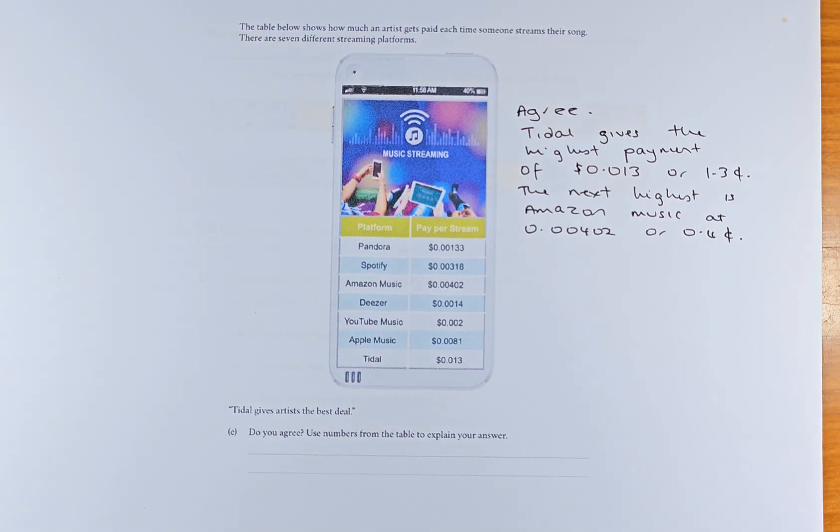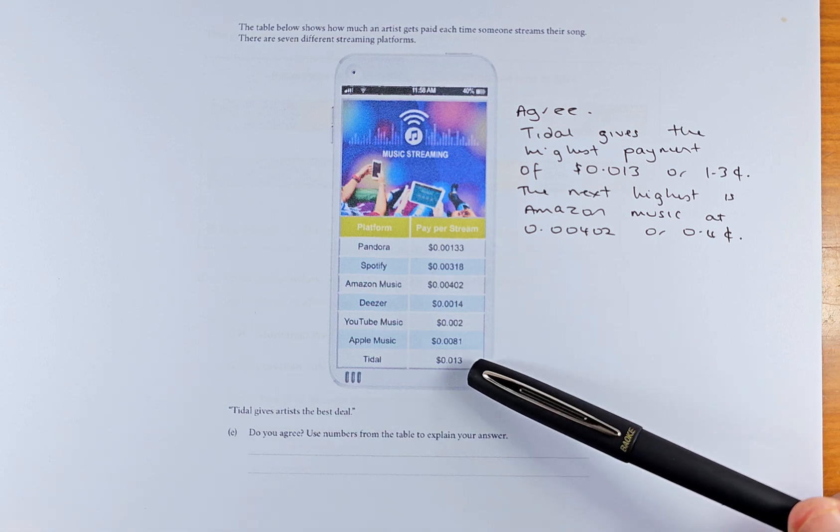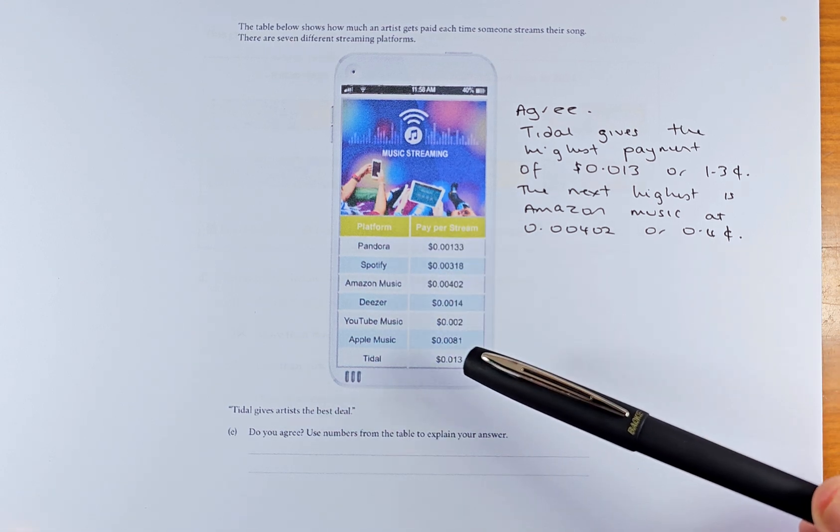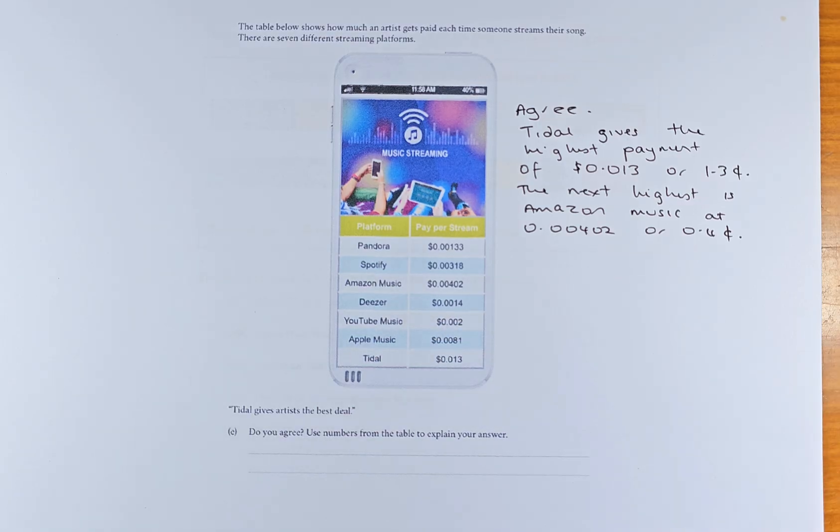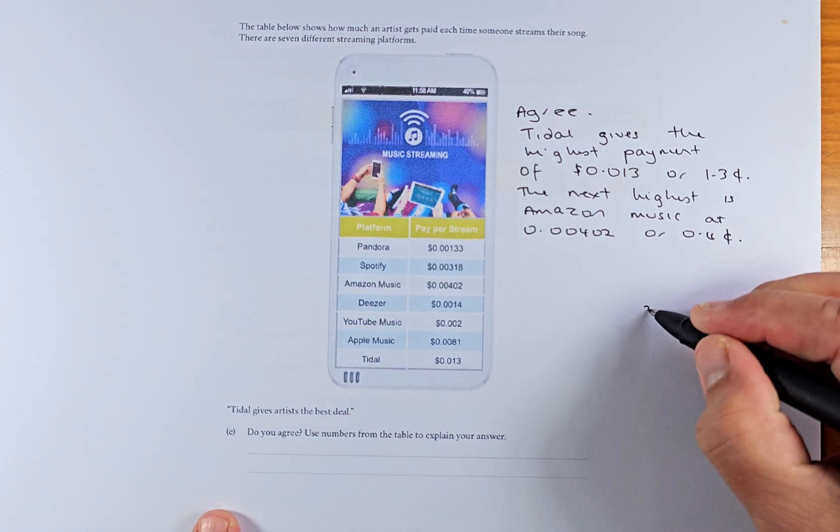To me, Tidal will give the highest payment of 0.013. If you look at all the payment, Tidal is in fact the one that gives you $0.013 or in short 1.3 cents per every music. The next highest is Amazon, which is 0.0402 or 0.4 cents per music. So in fact, I agree with the statement and I say Tidal gives the best deal. If you can answer that, that will be outcome number 3.